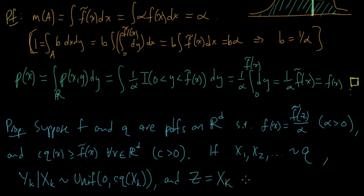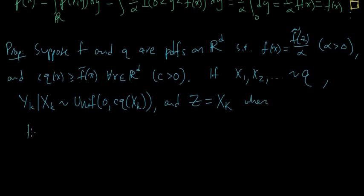And Z equals X_K, capital K, where capital K equals the smallest K, it's the min over K's, positive integer, such that Y_K is less or equal to F tilde of X_K. That's an X.